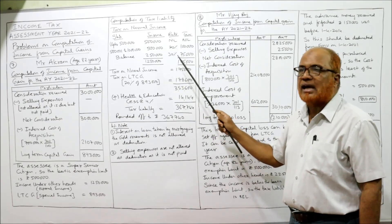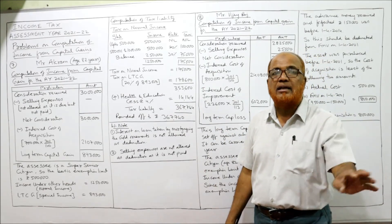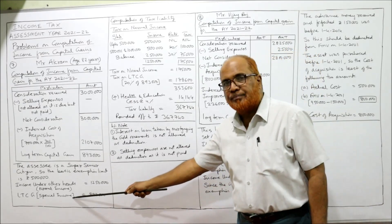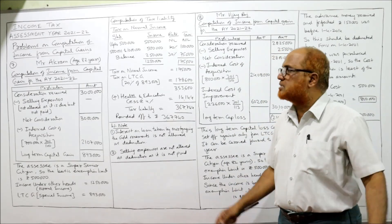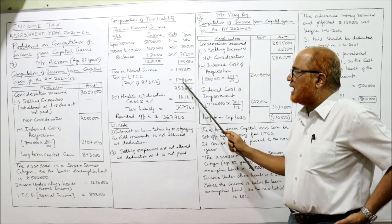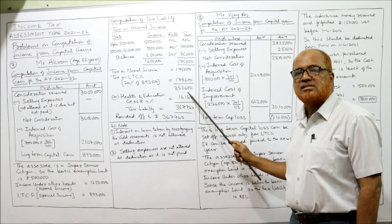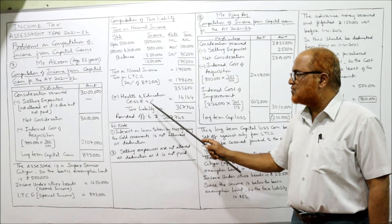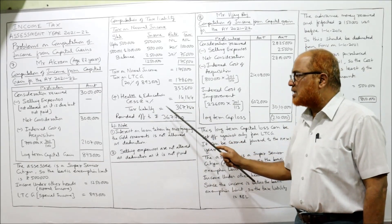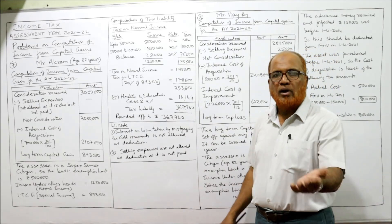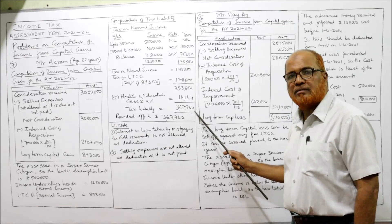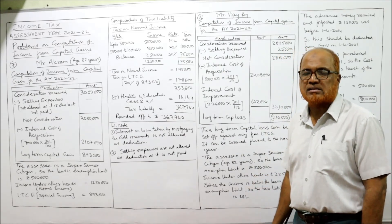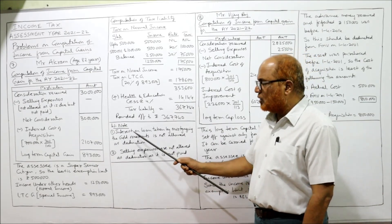Tax on normal income: 1 lakh 75 thousand. Add tax on special income (LTCG): 8 lakh 93 thousand × 20% = 1 lakh 78 thousand. Total: 3 lakh 53 thousand. Add health and education cess at 4%: 14 thousand. Tax liability = 3 lakh 67,744 — rounded off to 3 lakh 67,740.